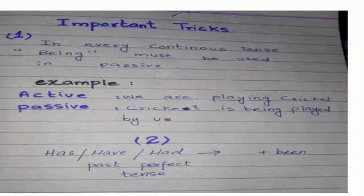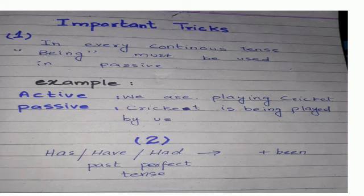There are two important tricks to learn active and passive voice, by which you can easily identify what is passive and what is active. The first trick: in every continuous sentence, when we convert to passive, we use 'being.' For example, 'We are playing cricket' becomes 'Cricket is being played by us.' Whether it is past tense, perfect tense, future, or continuous tense, we use 'being.' Being is present in the continuous tense.